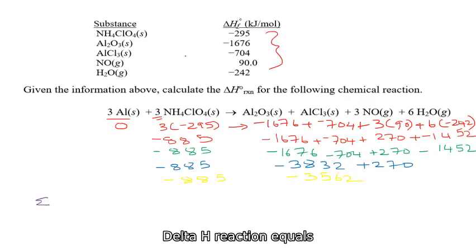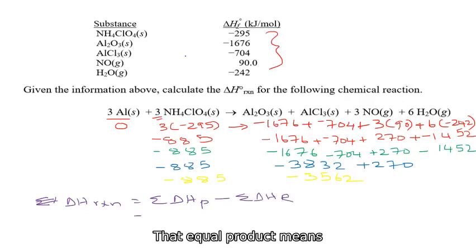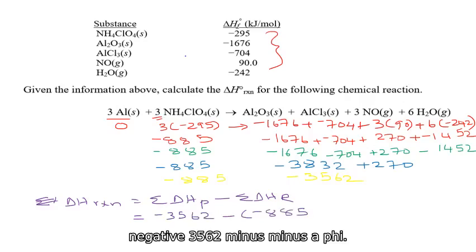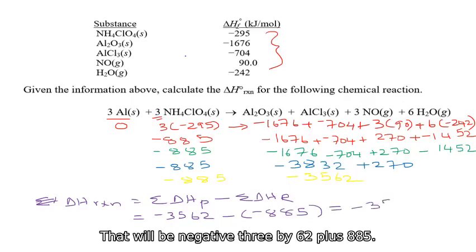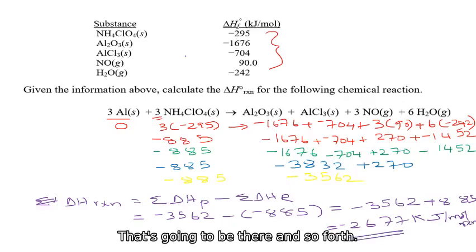And now we can substitute in the formula. Delta H reaction equals sigma of delta H of products minus sigma of delta H of reactants. That equals product means negative 3562 minus negative 885. That will be negative 3562 plus 885, which equals negative 2677 kilojoules per mole reaction. That's going to be the answer for this question.